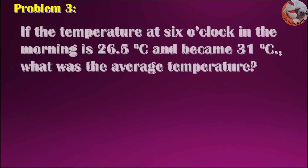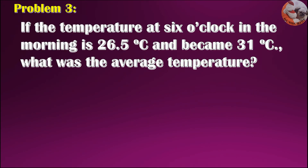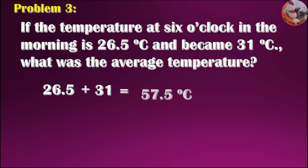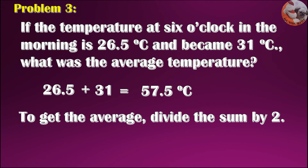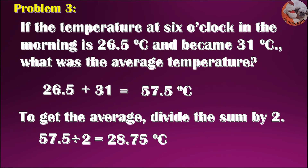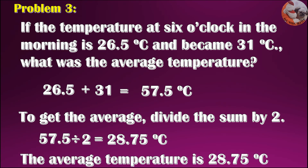Problem 3. If the temperature at 6 o'clock in the morning is 26.5 degrees Celsius and became 31 degrees Celsius, what was the average temperature? You add the two given temperatures: 26.5 plus 31 is equal to 57.5 degrees Celsius. To get the average, divide the sum by 2: 57.5 divided by 2 is equal to 28.75 degrees Celsius. The average temperature is 28.75 degrees Celsius.